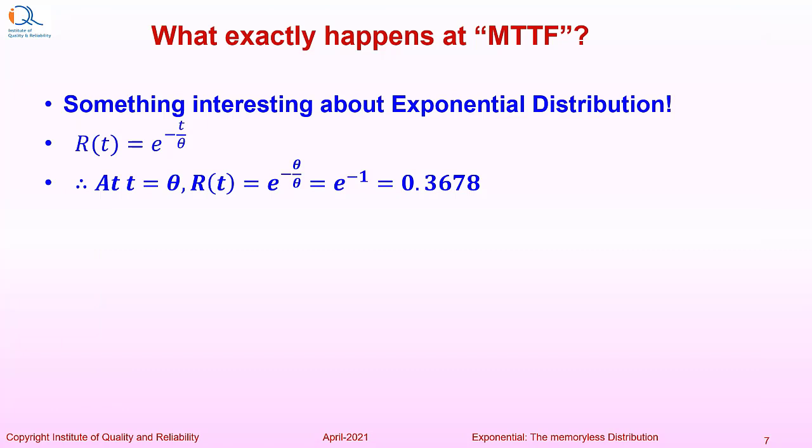What exactly happens at mean time to failure? Something interesting about exponential distribution. Reliability at time t equals e to the power minus t upon theta and therefore at time equal to theta, reliability at time t will be equal to e to the power minus theta upon theta or e to the power minus 1 which can be easily calculated as 0.3678.